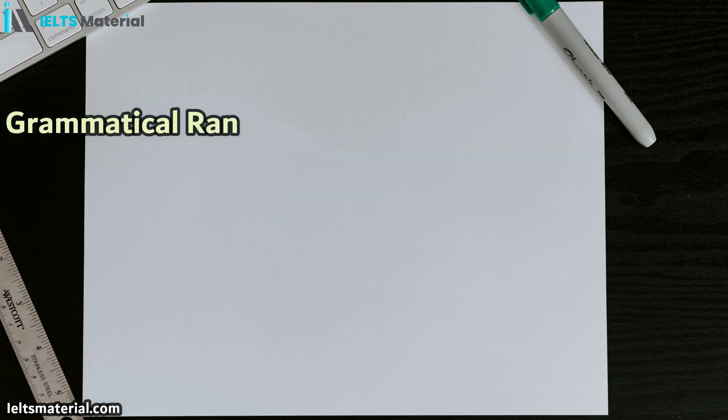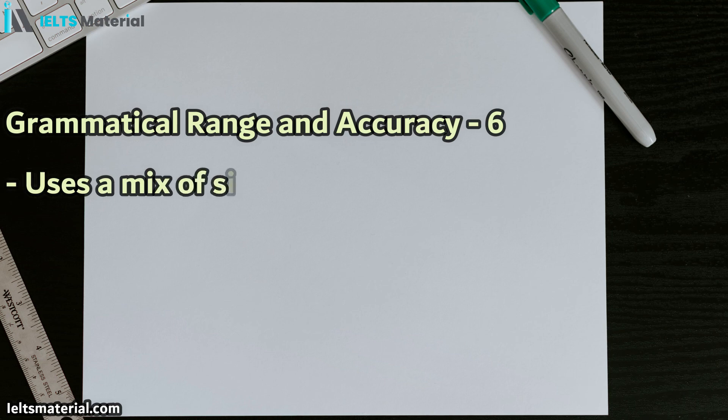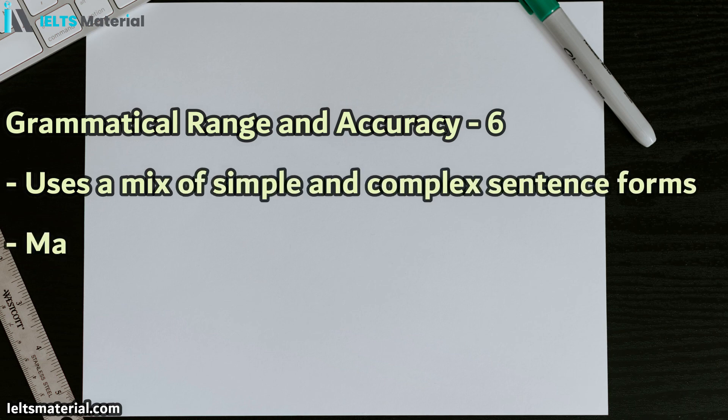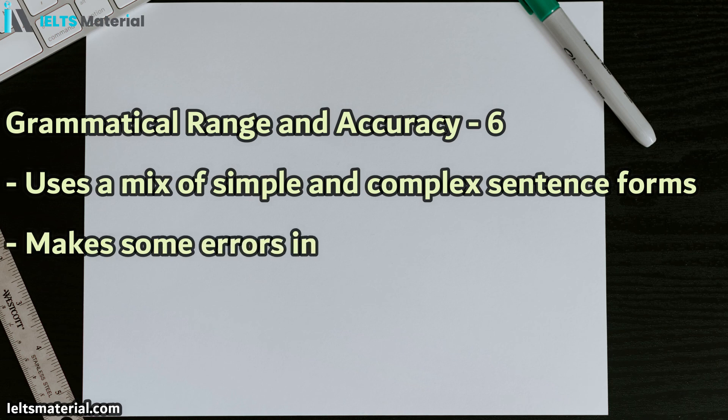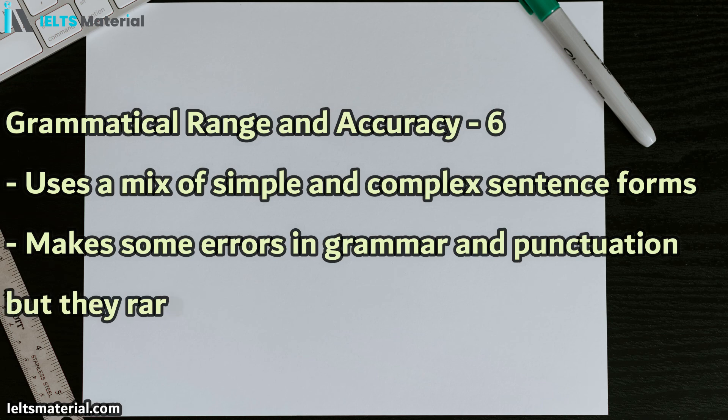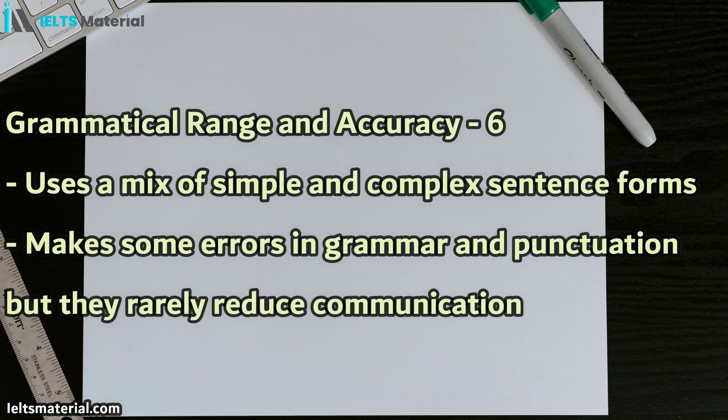And for grammatical range and accuracy, again, it's the same whether it's academic or general or task 2 or task 1. For band 6, you need to use a mix of simple and complex sentences. You do make some errors in grammar and punctuation, but they rarely reduce communication. So basically, you need to use a fairly good range of grammar, but you don't have to be perfect to get a band 6.